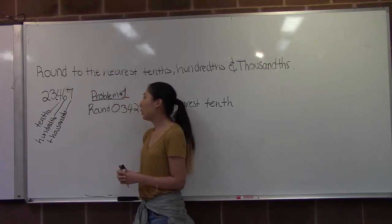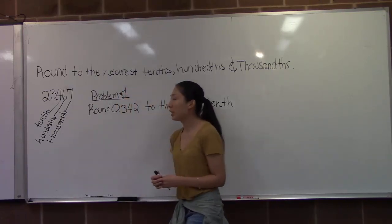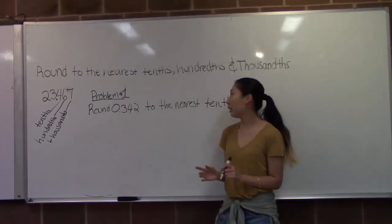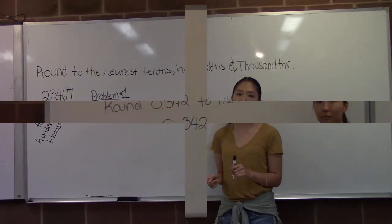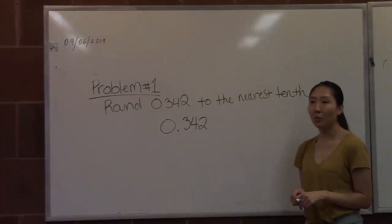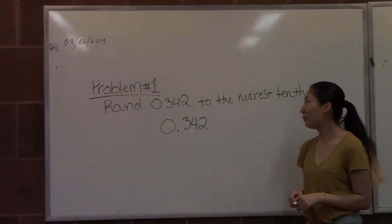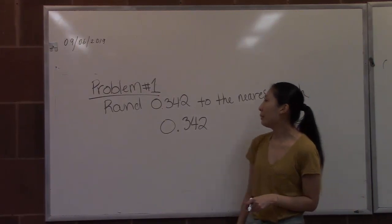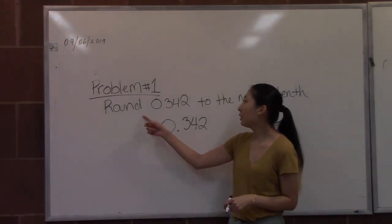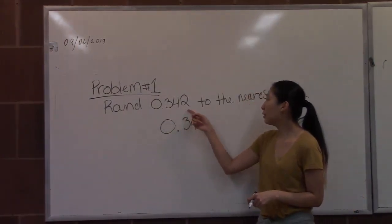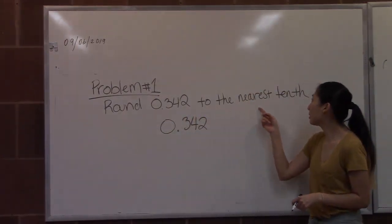So now that we know the decimal place values of a number, we can begin our first problem. We'll be doing problem number 1. In this problem, we'll be rounding 0.342 to the nearest tenth.